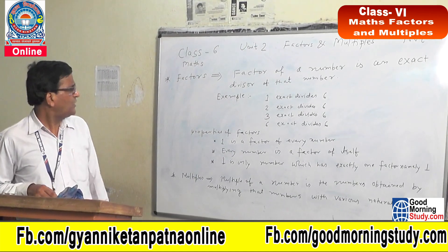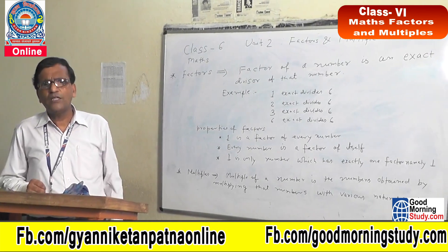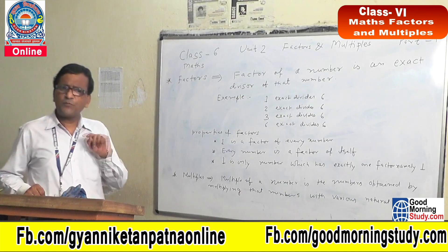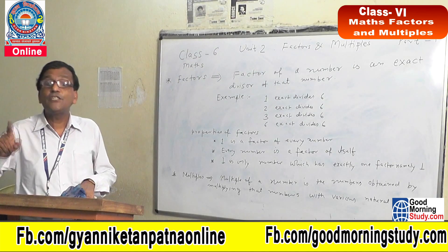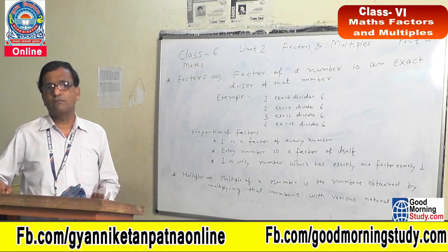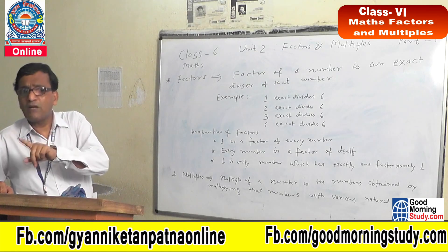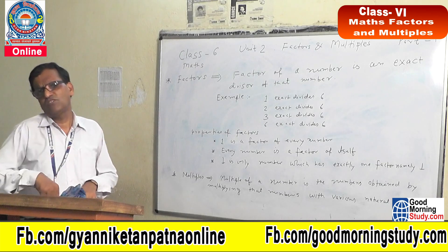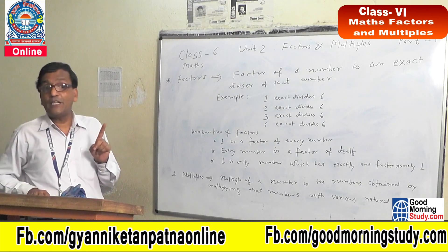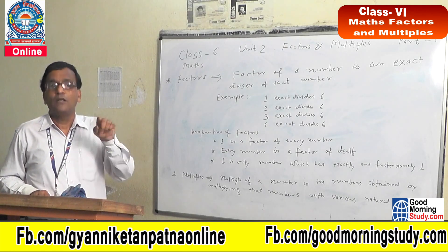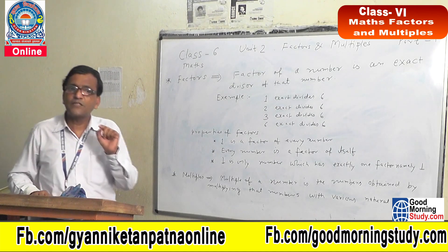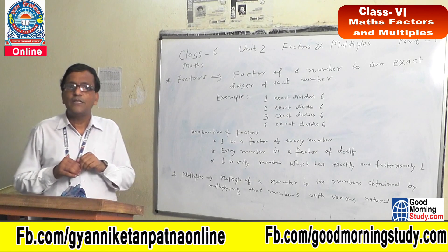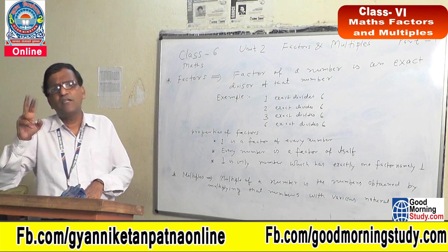We can count the factors of every number. For example, factors of 6 are 1, 2, 3, 4 — so it is countable. If someone asks how many factors does 6 have, you will say there are 4 factors of 6. Next property: factors of a number are equal to or less than the number. Factors of 6 — the number 6 itself is a factor, and the other factors 1, 2, 3 are all less than 6. So this property is very important: factors of a number are equal to or less than the given number.